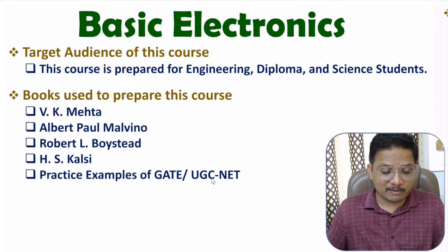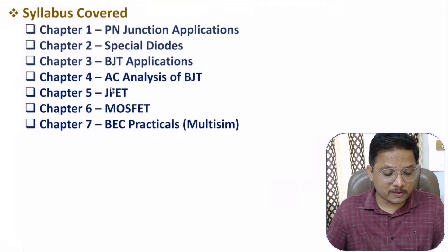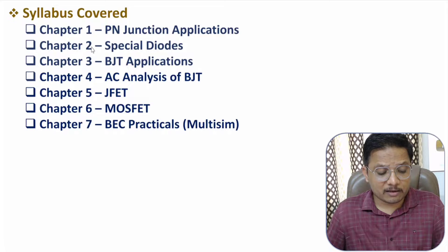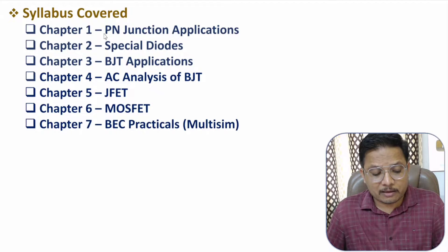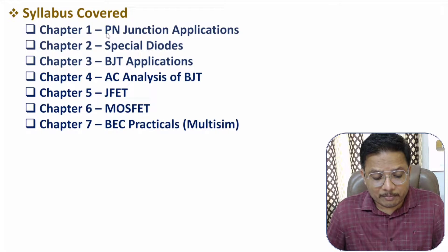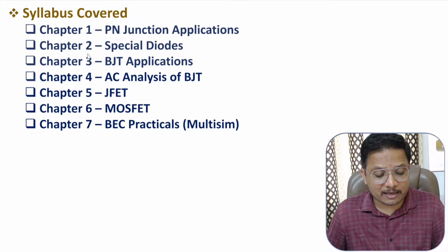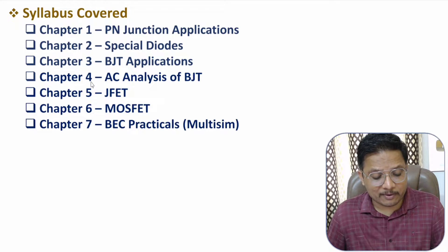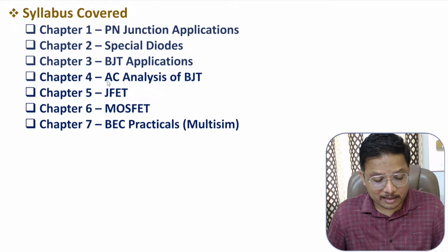If you look at the syllabus of this course, in total there are seven chapters. In the first chapter, I have covered PN junction applications. In the second chapter, I have covered special diodes. In the third chapter, I have explained BJT applications. In the fourth chapter, I have covered AC analysis of BJT.